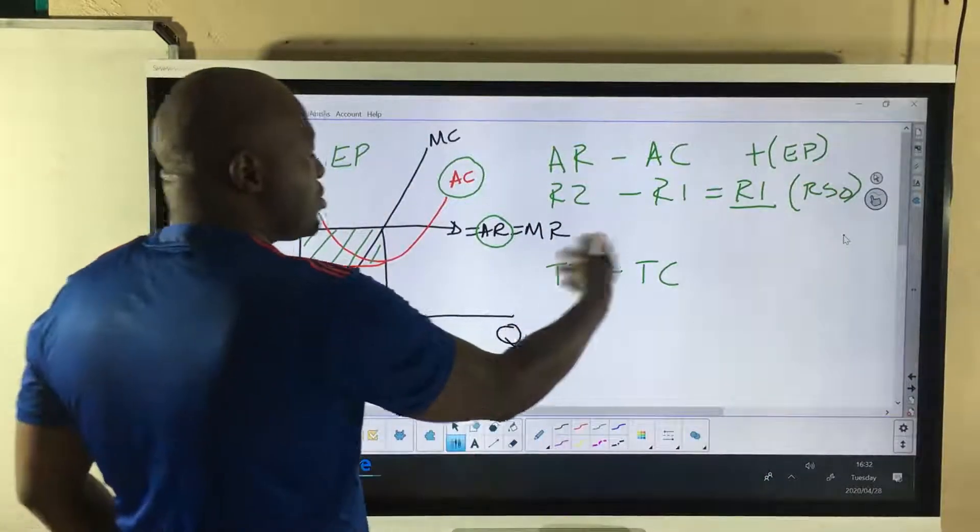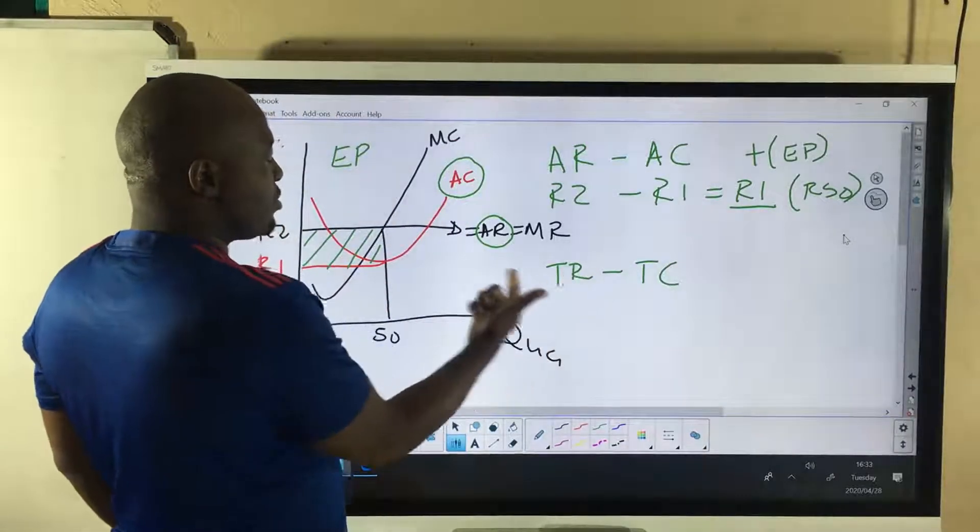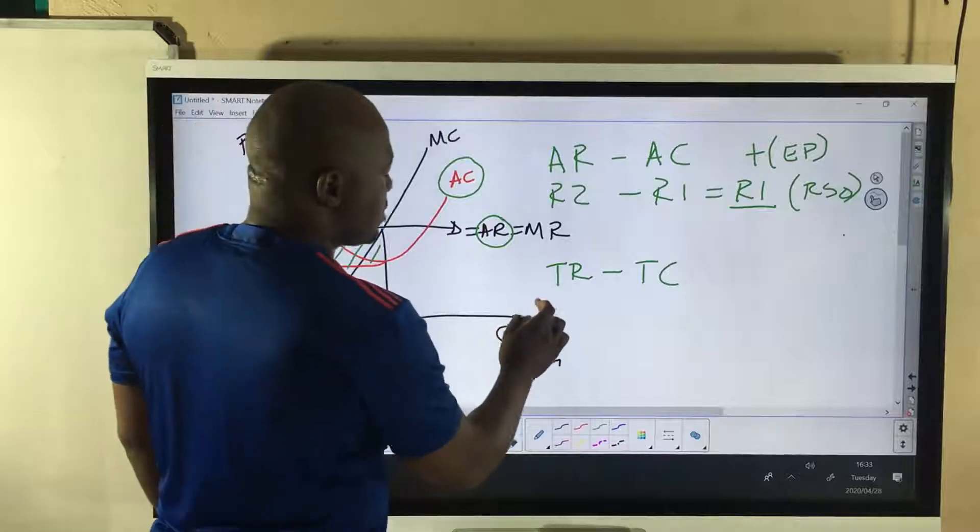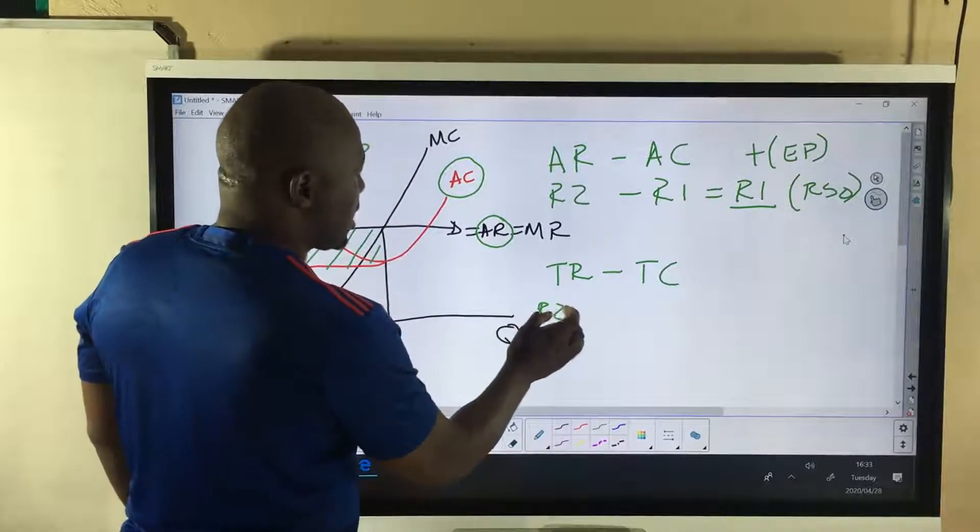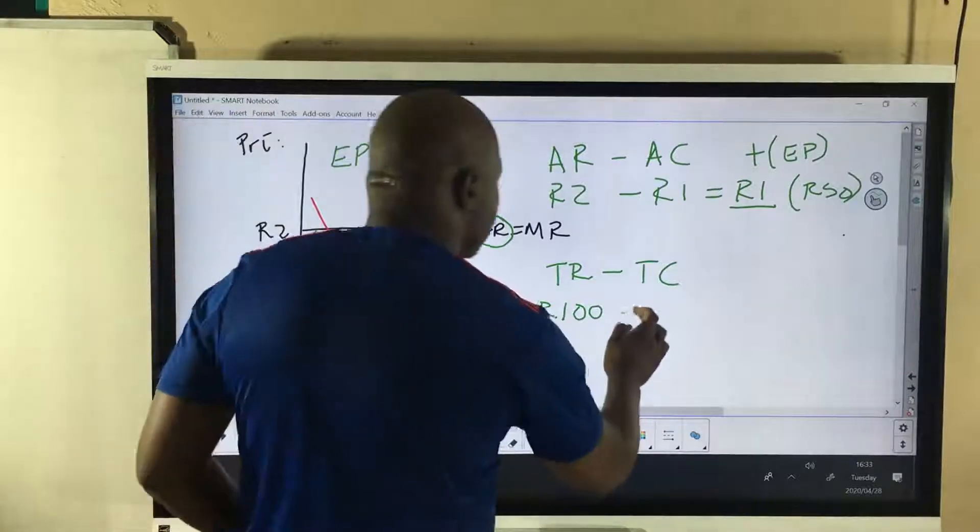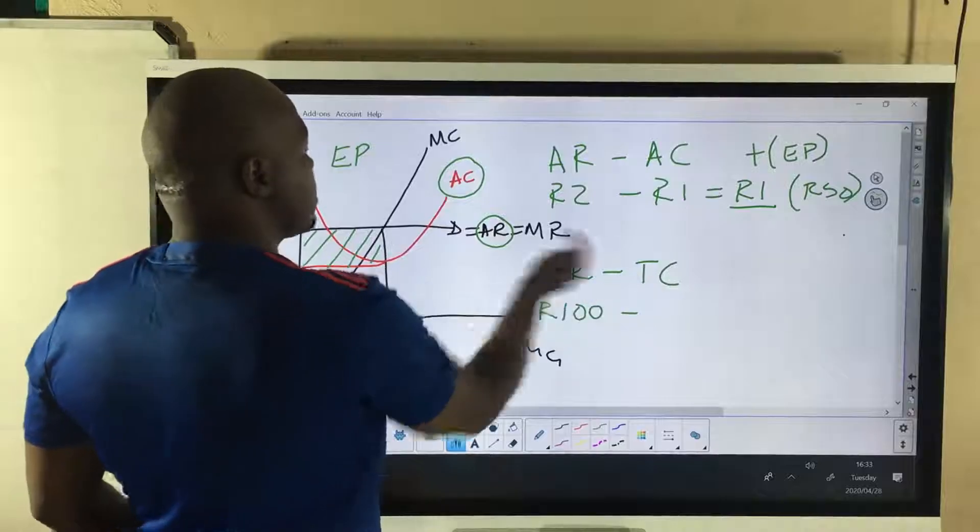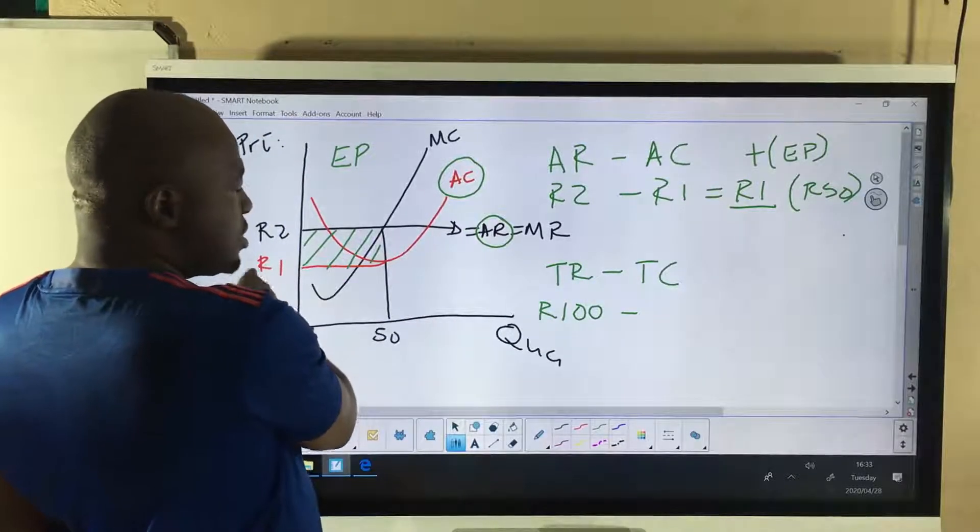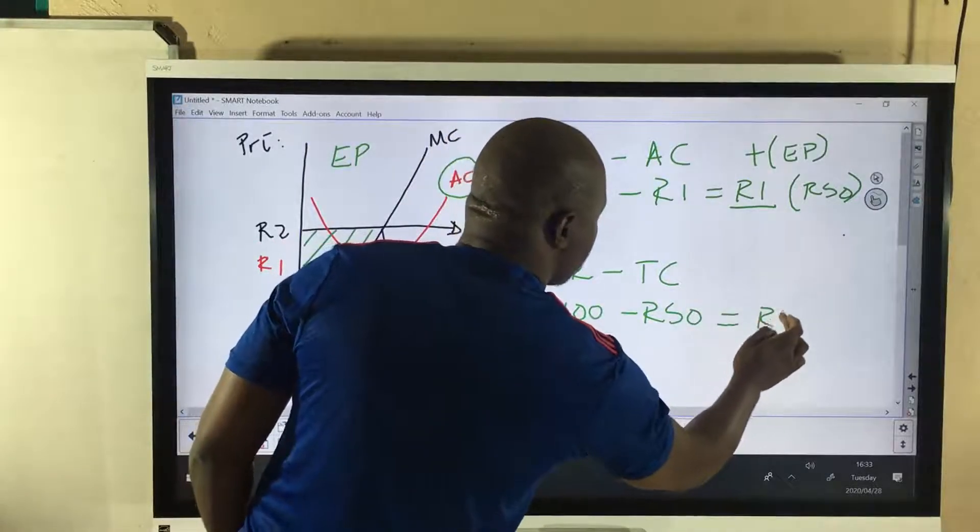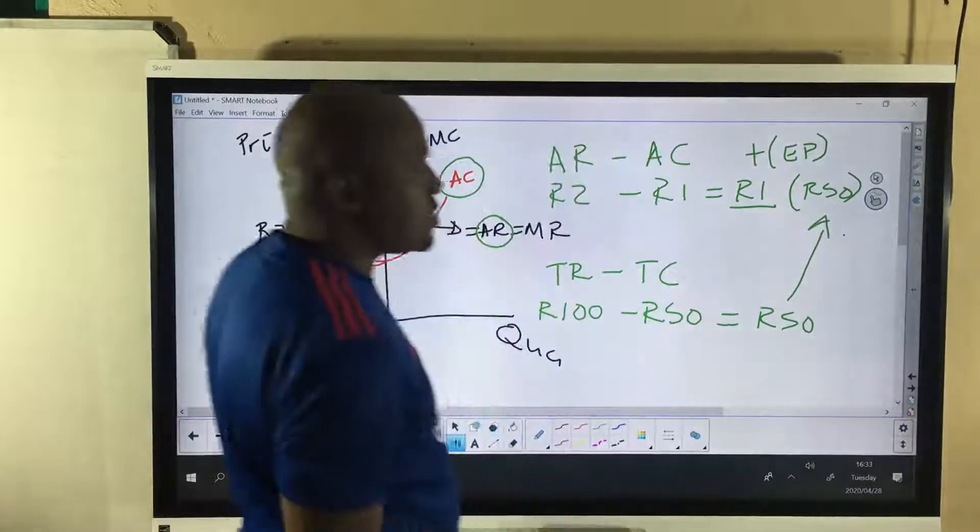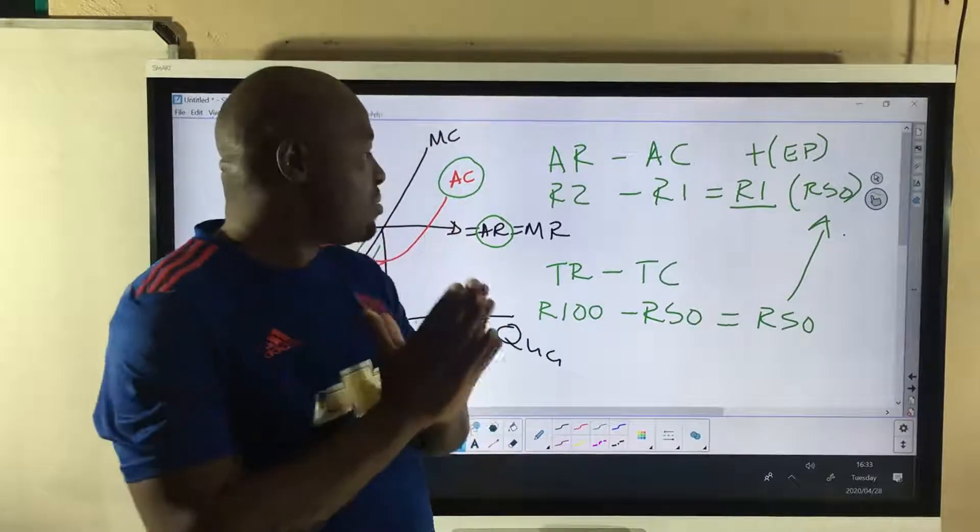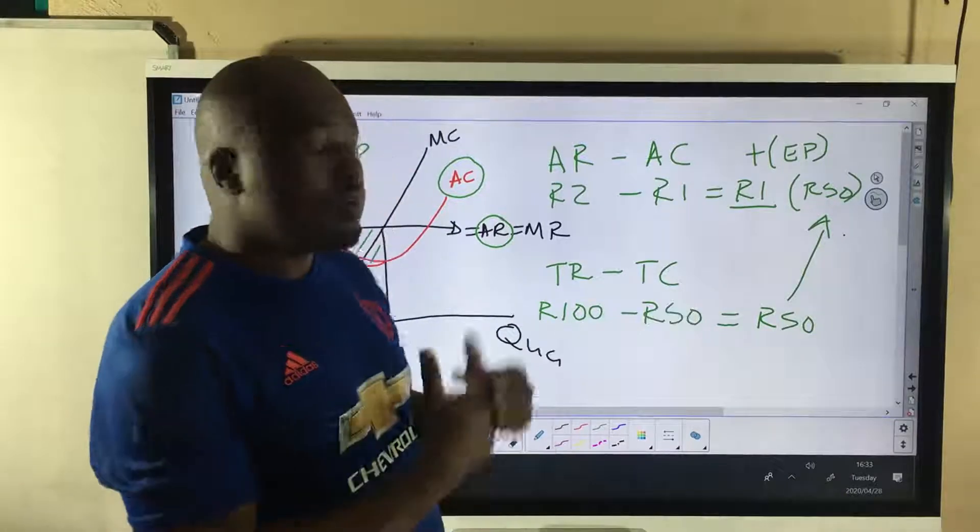But we can use another formula, which is total revenue minus total cost. How do we get total revenue? We say average revenue, 2 rands times quantity. So 2 times 50, what do we get? We get 100. Now I'm saying we get 100, 50 times 2. Minus average cost. Total cost is average cost times quantity. So our average cost is 1 rand, 1 times 50, that's 50. So 100 minus 50, it gives us 50 rands. Do you see that this 50 rands is the same as that? So the firm is making an economic profit of 1 rand per unit. If we want to calculate the total profit made by the firm, we simply say 100 minus 50, that gives you 50. So let's go back to our textbook and see if there's anything I missed out.